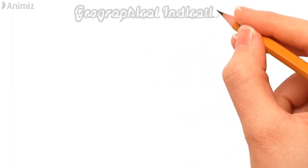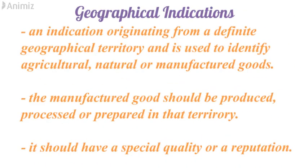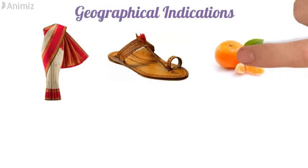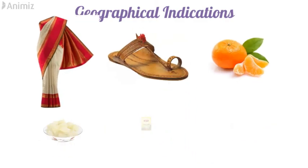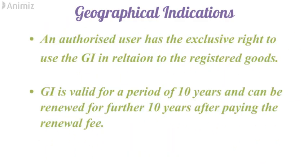Next is geographical indications. A GI is an indication originating from a definite geographical territory and is used to identify agricultural, natural, or manufactured goods. The manufactured goods should be produced, processed, or prepared in that territory only, and should have a special quality or reputation. Famous examples include Kanchipuram saree, Kolhapuri chappal, Nagpur oranges, Agra petha, Darjeeling tea, and Tirupati laddu. An authorized user has the exclusive right to use the GI in relation to the registered goods. A GI is valid for a period of 10 years and can be extended further by paying the renewal fees.